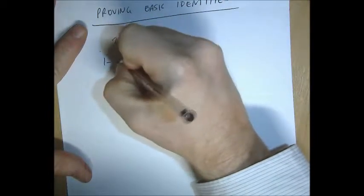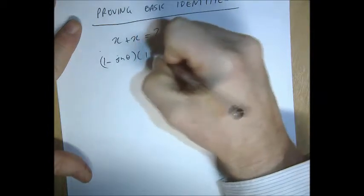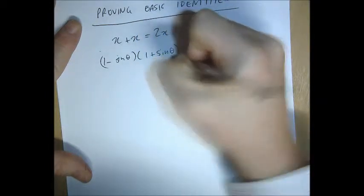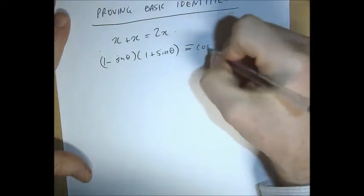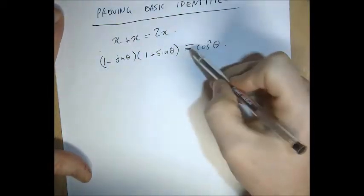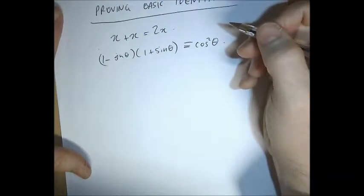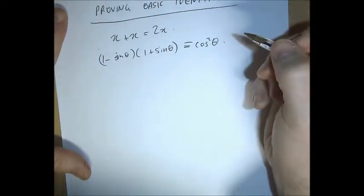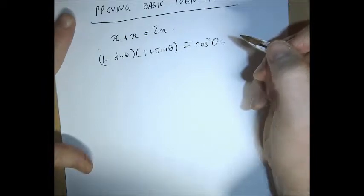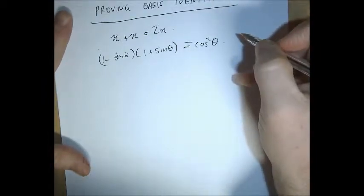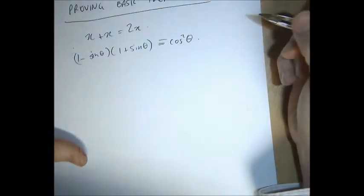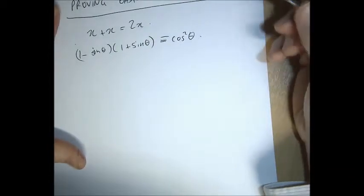The first example will be to prove this. The triple equals sign is to help you remember that it's an identity, but you can't always rely on that being there. The device is to pick either the left-hand side or the right-hand side and try to turn it into the other. You're not allowed to do cross-multiplication because it's not an equation. You just have to use a combination of algebraic manipulation — expansion of brackets, adding fractions, that sort of thing — and substitutions.